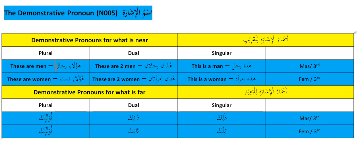The plural 'rijalun' is a broken plural — it's on a pattern you have to learn. 'Haulai rijalun' — these are men. So: 'hadha' means this (singular near masculine), 'hadhani' means these two (dual near masculine), and 'haulai' means these three or more (plural near masculine).